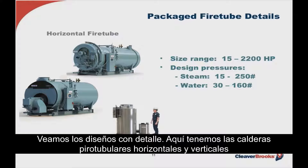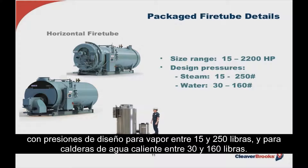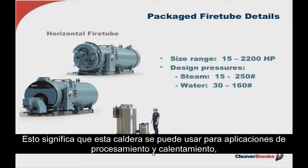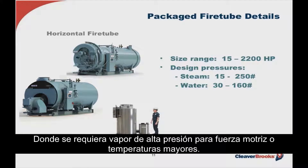Starting with the fire tube boiler, it comes in horizontal or vertical orientation and typically spans a package range between 15 and 2,200 horsepower, with design pressures for steam between 15 and 250 pounds and for hot water boilers between 30 and 160 pounds. This border can be used in both process and heating applications and is typically found in industrial process applications such as food, petrochemical plants, hospitals, university campuses, and wherever high-pressure steam is required for motive force or higher temperatures.